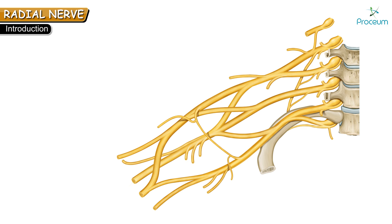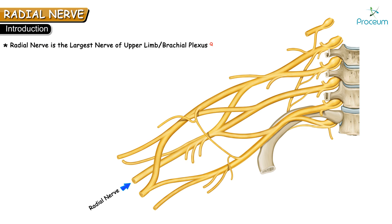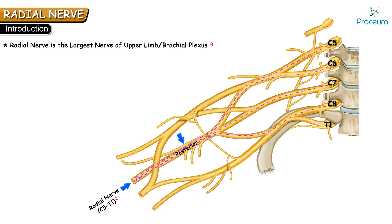Let's discuss a very important nerve: the radial nerve. The radial nerve is the largest nerve of the upper limb. It is a branch of the posterior cord of the brachial plexus with the root value of C5 to T1. So all the roots of the brachial plexus — C5, C6, C7, C8, and T1 — contribute to the formation of the radial nerve.